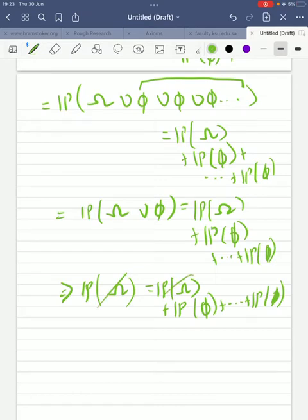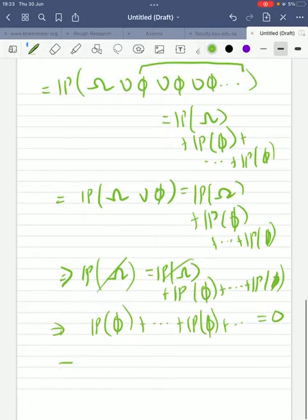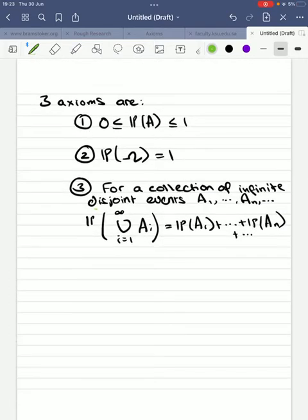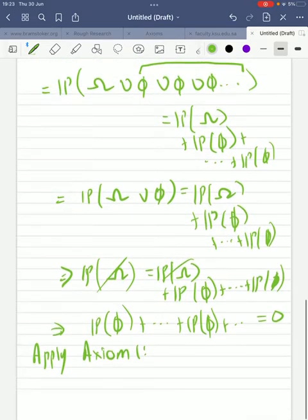Now, we can cancel out these two probabilities, giving us this result here, equals zero. Now, we're going to apply axiom one. And axiom number one told you that the probability of an event is always greater than or equal to zero and less than or equal to one. So, what this means for us is, think about it, you're adding an infinite collection of numbers, and the result is zero. But each number itself is greater than or equal to zero, which means that each number itself must be zero. I hope that made sense. It's very intuitive if you think about it. But this gives us what we would like to prove.